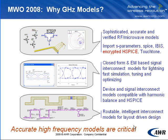So why gigahertz models? In short, gigahertz models by their very nature are broadband. RF microwave design has tended to include signals with a much broader frequency spectrum than traditional signals. Moreover, the type of phenomena they model — distributed or coupled phenomena — really lend themselves well to signal integrity issues in this regime, and this is regardless of whether you're doing a time domain or frequency domain simulation.